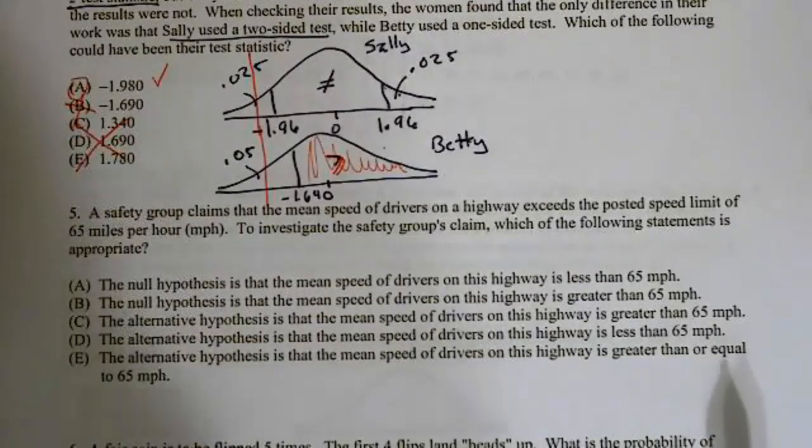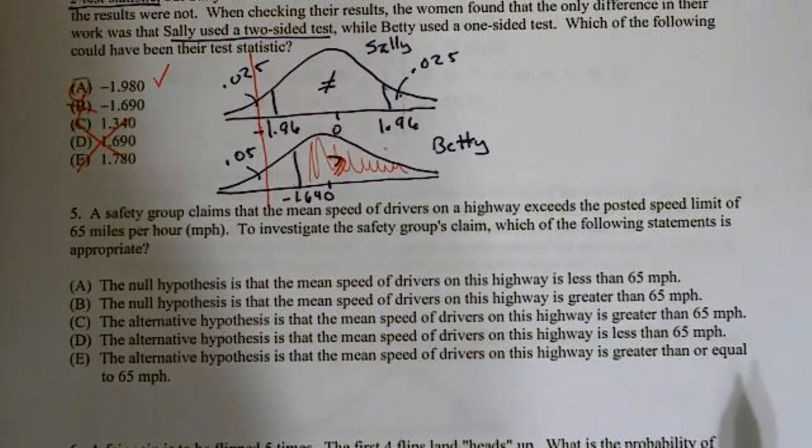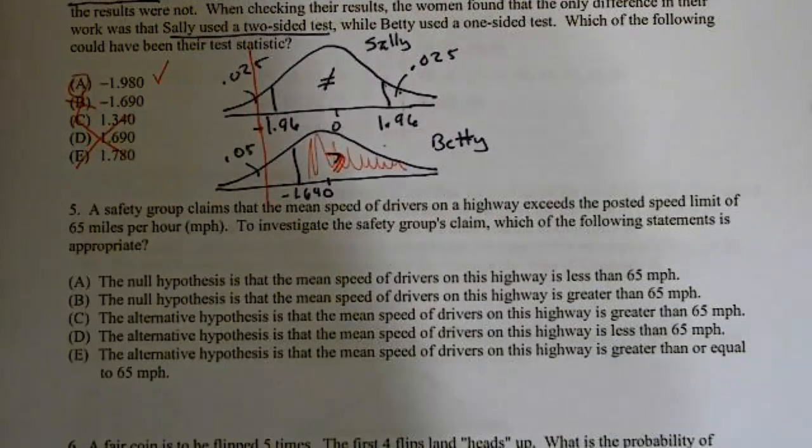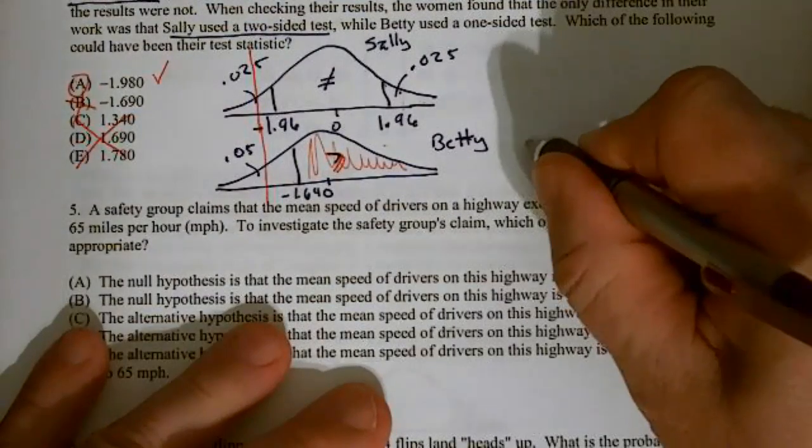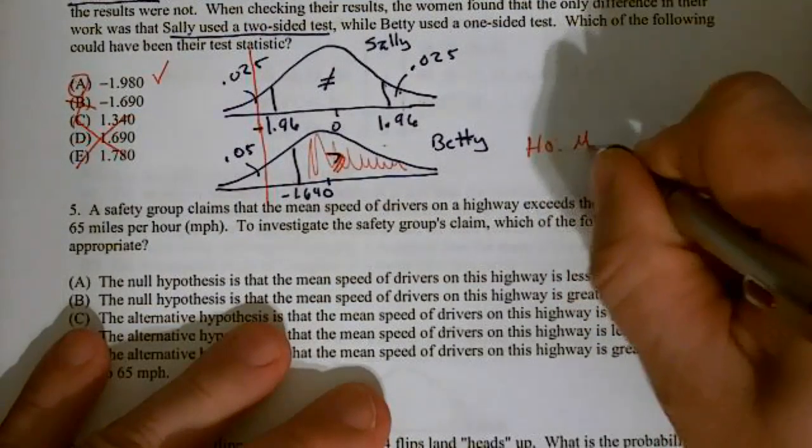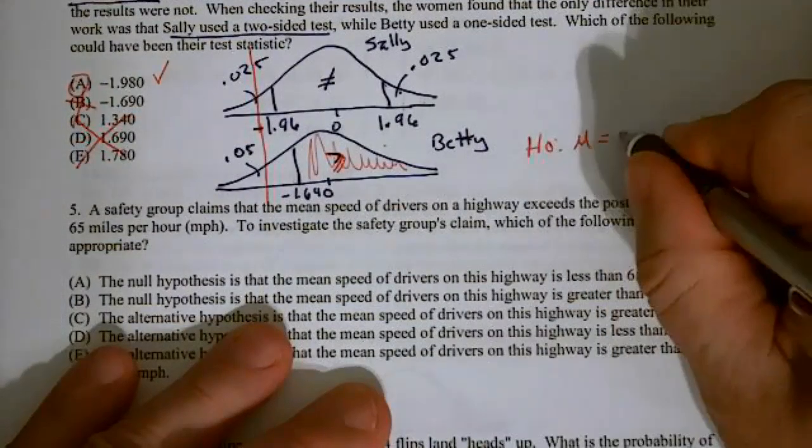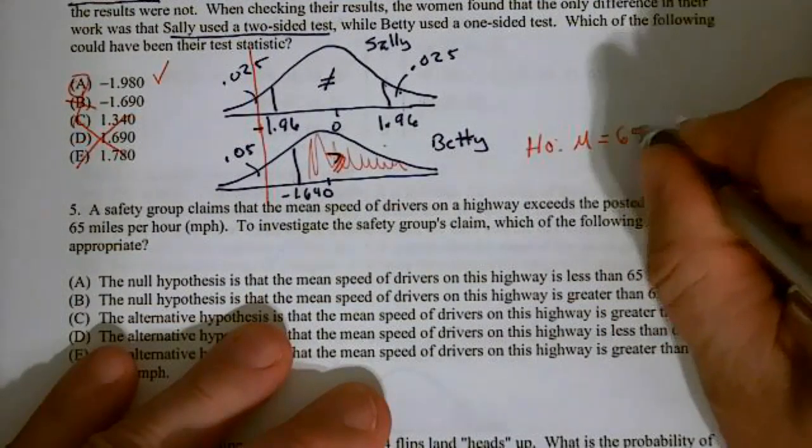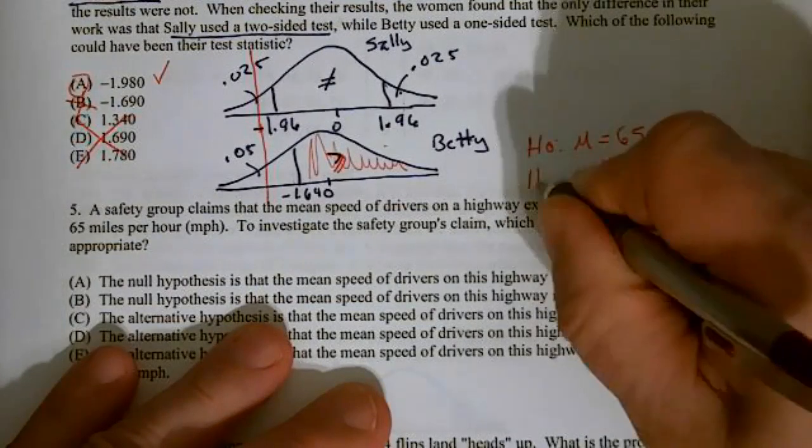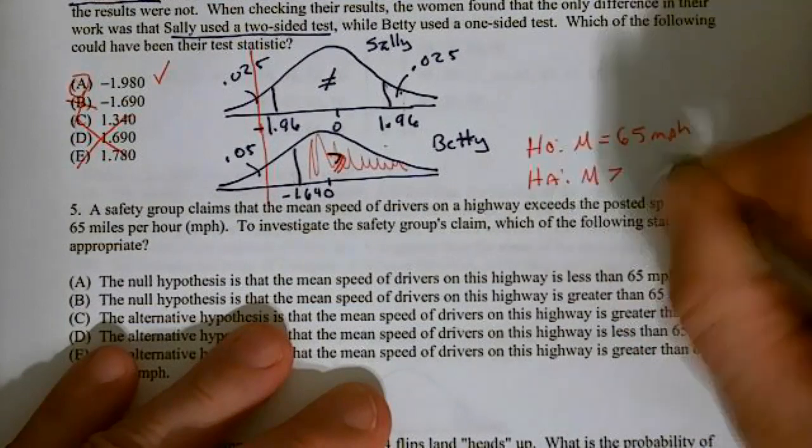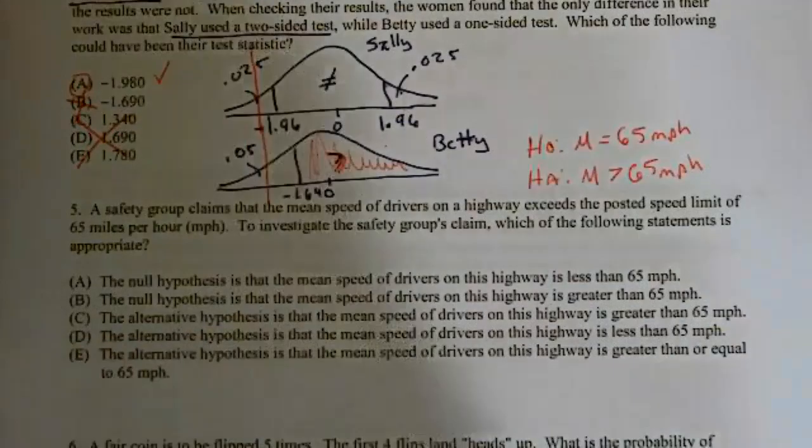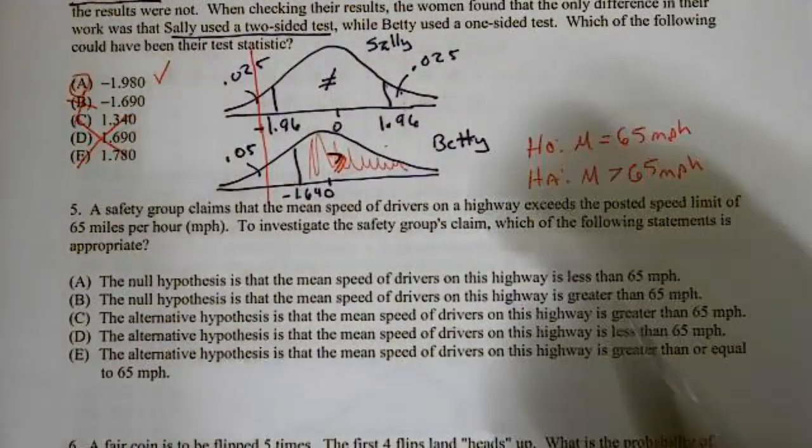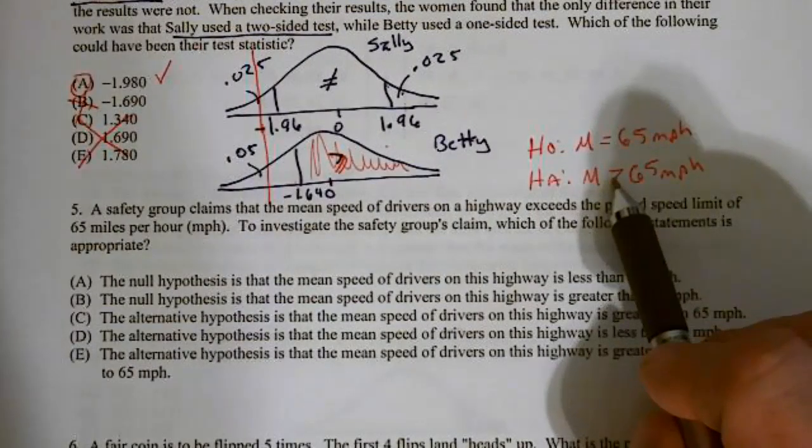Number five. The safety group claims that the mean speed of drivers on the highway exceeds the posted speed limit of 65 miles per hour. To investigate the safety's claims, which of the following is appropriate? And they start saying a hypothesis. H0: mu equals 65 mph. HA: Well, we're worried about it being greater than. Remember, our null hypothesis is always an equal to. So this is always going to be equal. So this must have been the greater than, because that's what we're concerned about.